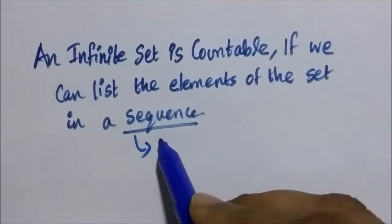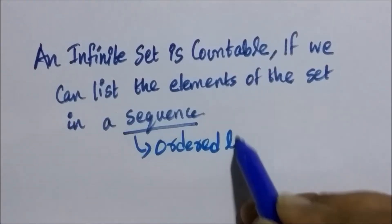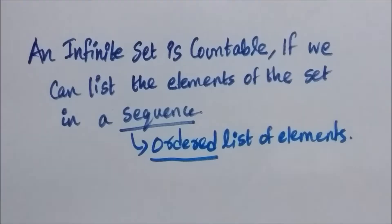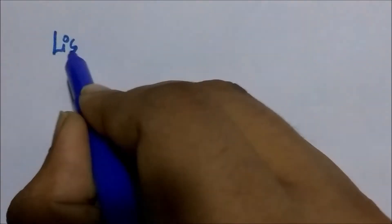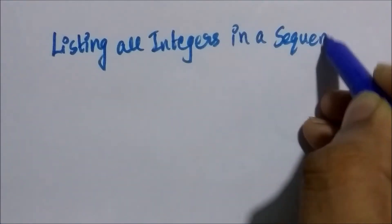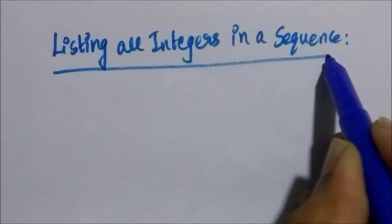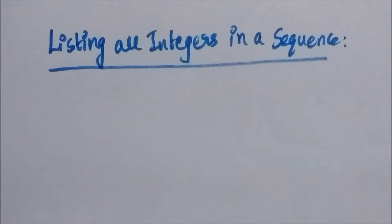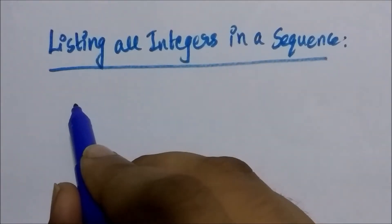A sequence meaning an ordered list of elements. And hence, if we can list all the integers in a sequence, then we have proved that the set of integers is a countable set.